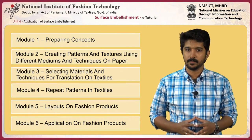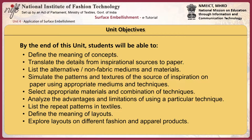By the end of this unit, students will be able to define the meaning of concepts, translate the details from inspirational source to paper, list the alternative non-fabric mediums and materials, simulate the patterns and textures of sources of inspiration on paper using appropriate mediums and techniques, select appropriate material and combination of techniques keeping in mind the look and quality parameters for translation on textiles, and analyze the advantages and limitations of using a particular technique over other methods.